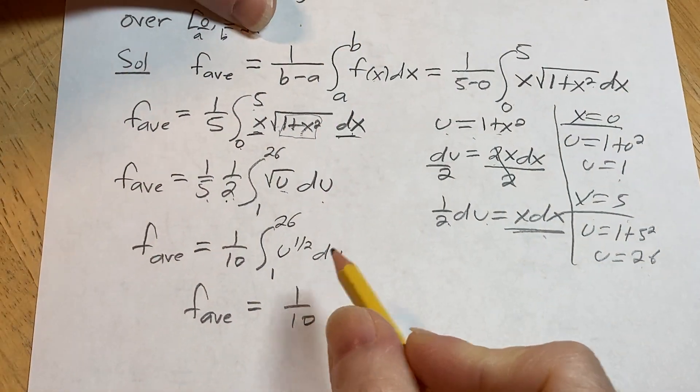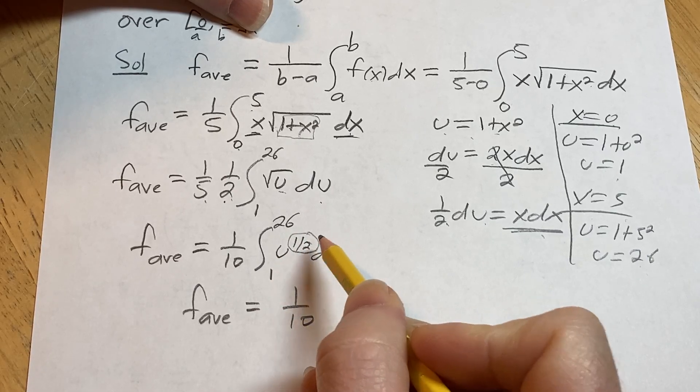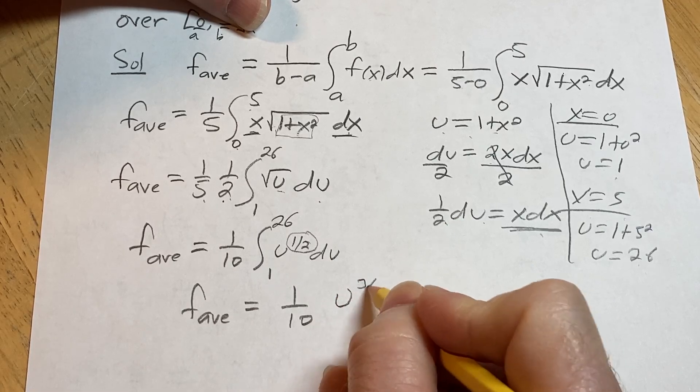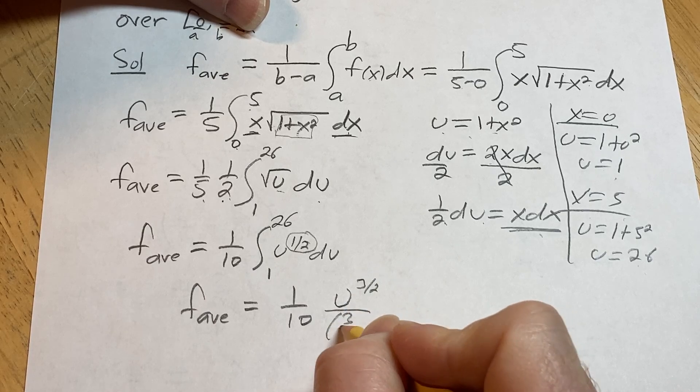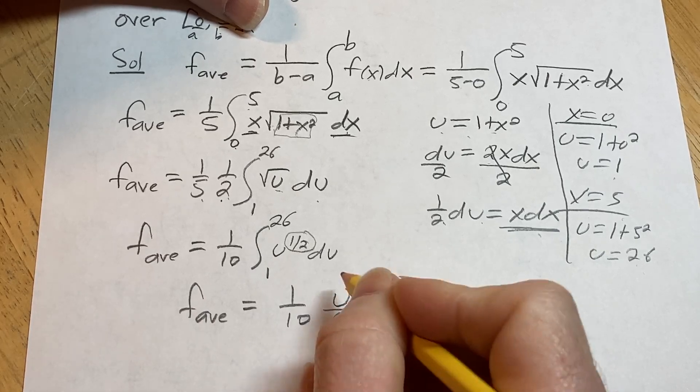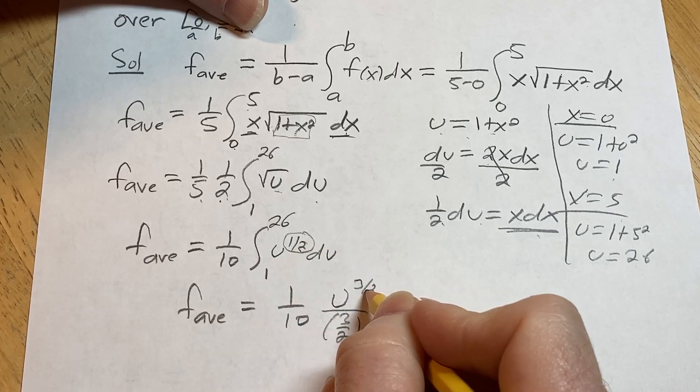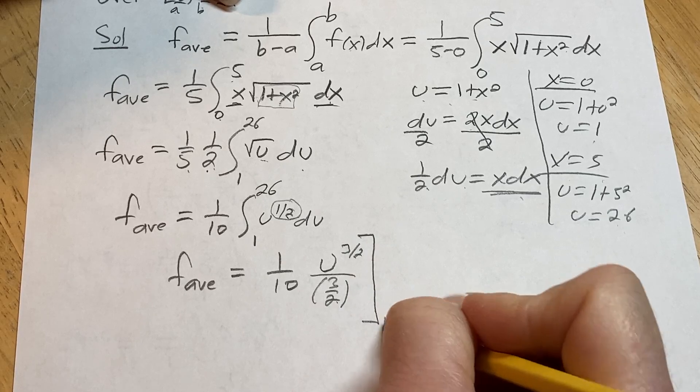So the average value of our function is equal to 1 tenth. Now we can integrate this pretty easily, right? We just take this number and we add 1 to it, right? So 1 half plus 1 is 3 halves. So it's u to the 3 halves, and then the power rule says we divide by that. Now you can get in the habit of multiplying by the reciprocal, but I thought let me just show all the steps this time. So you add 1 to it, 1 half plus 1 is 3 halves, and then you divide by the result. Every time, right? We're going from 1 to 26.